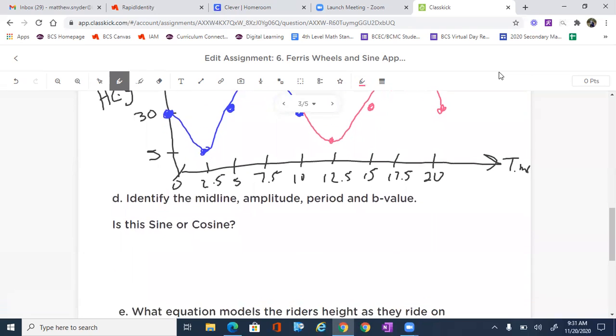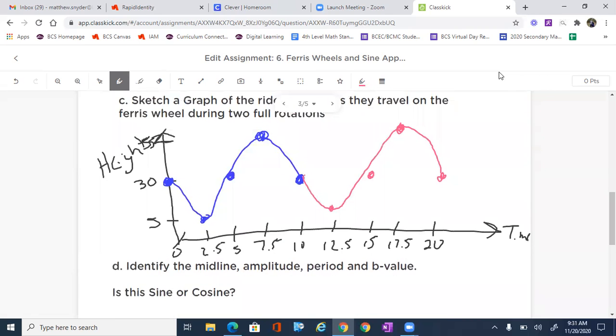Now, let's go ahead and identify our midline, our amplitude, period, B value, and sine or cosine. We know the midline is right through the middle. So there's our midline right here. So that is going to be Y equals 30. We know the amplitude is the distance from the middle to the maximum or the midline to the minimum. So from 30 to 55 is going to be 55 minus 30, which is 25. It's the radius of the Ferris wheel. So the amplitude is 25.